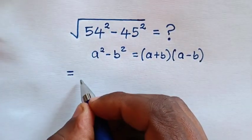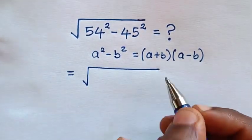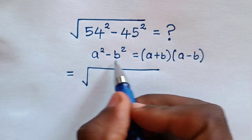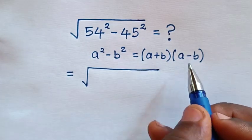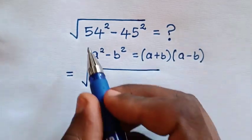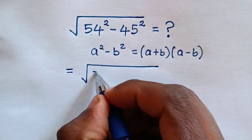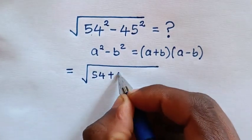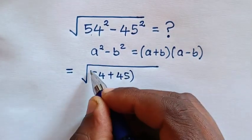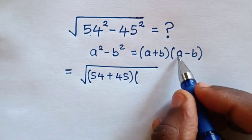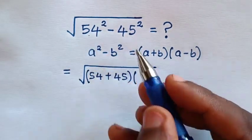Then it will equal square root of this difference of squares, which is the same as this form. So it will be a plus b is 54 plus 45, times a minus b is 54 minus 45.